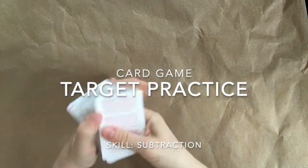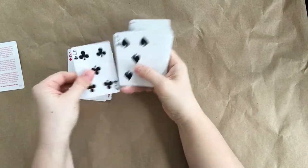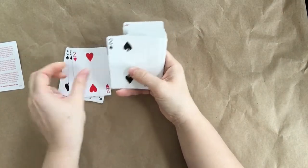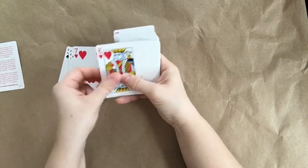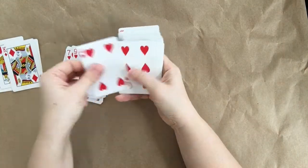Hello friends! Okay, we're ready to play a subtraction card game called Target Practice. You'll see me here separating the cards. You need to take out the Kings, Queens, Jacks, Tens, and Jokers.